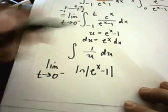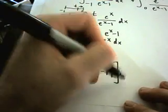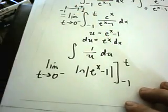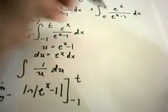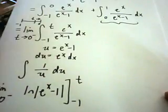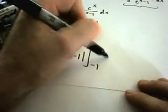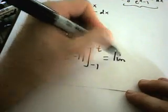Now I'll just plug my limits back in there. T is approaching 0 from the left and we're doing this from negative 1 to t. Let's plug all of our values in here. I'm not doing anything with the right one yet, just in case the left one happens to be divergent, then I'll be done.